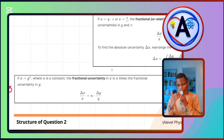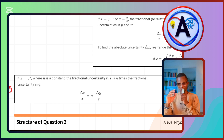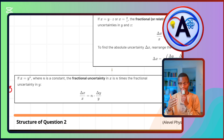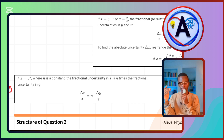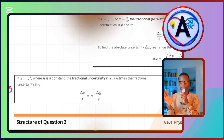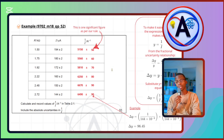If x = y^n where n is a constant, the fractional uncertainty in x is n times the fractional uncertainty in y: Δx/x = n × Δy/y. This is because y^n is repeated multiplication — for example y² = y × y, so Δy/y + Δy/y = 2 × Δy/y. So for something like y = t², just say Δy/y = 2Δt/t, then multiply by y to get Δy.